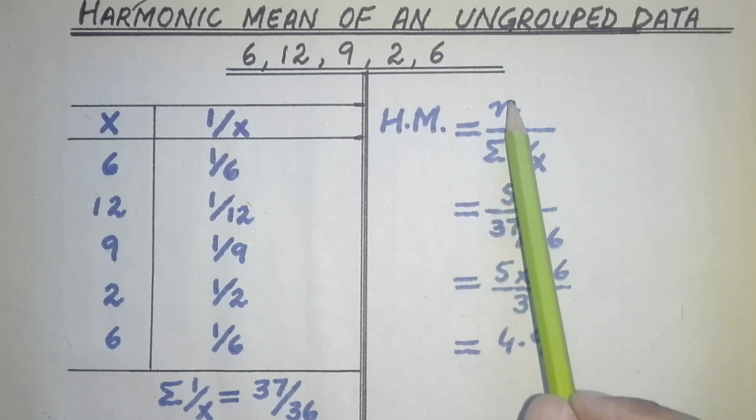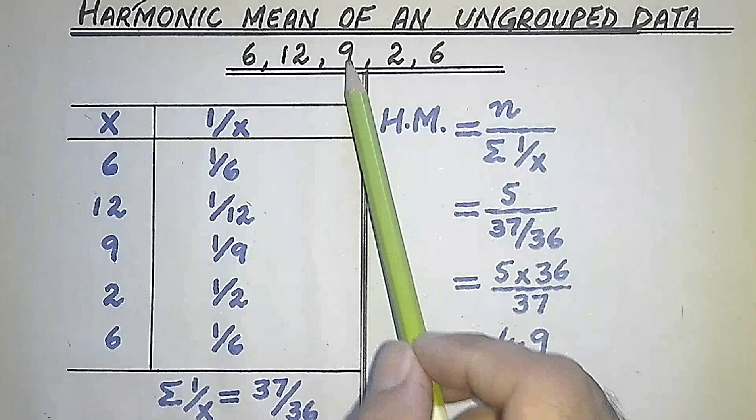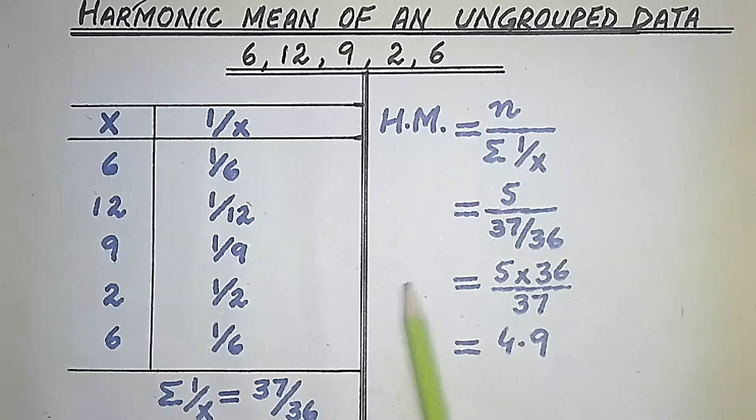In this formula, we put values where n is the number of terms and sigma 1 over x is the sum we calculated. We then do the simplification process, and at the end we find the harmonic mean of the given ungrouped data.